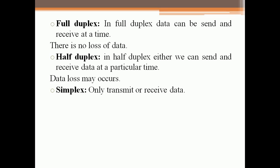In full duplex mode, signals are transmitting at the same time but in half duplex mode, signals transmit at a particular time. So in half duplex, data loss may occur but in case of full duplex, because signals are transmitting at the same time, there is no loss of data. And another case is simplex mode. In this mode, the communication is unidirectional.